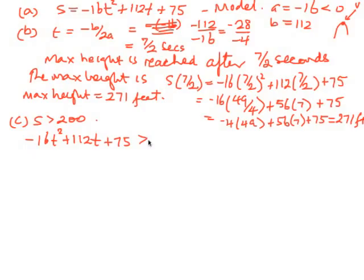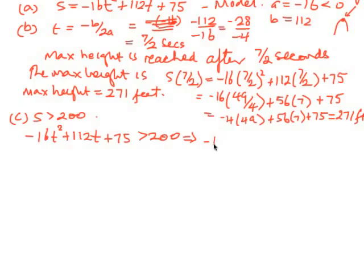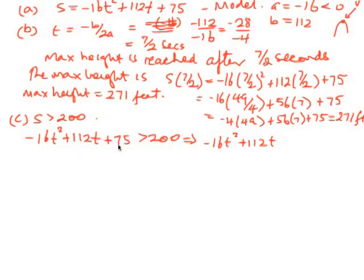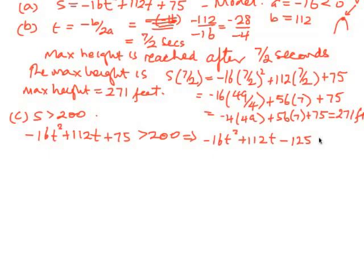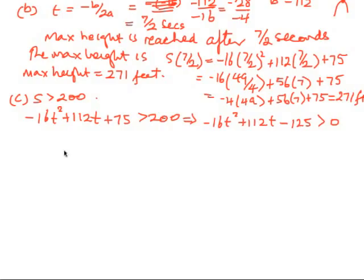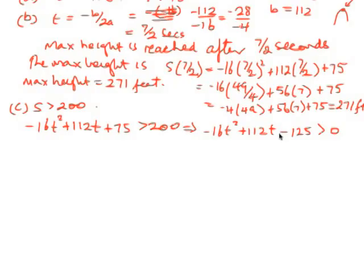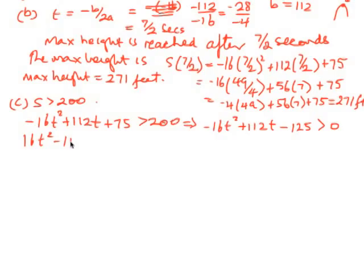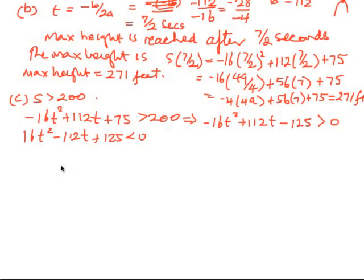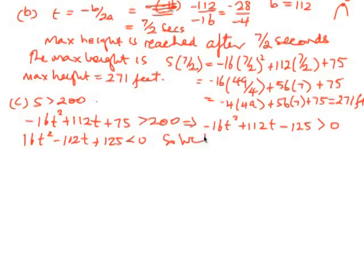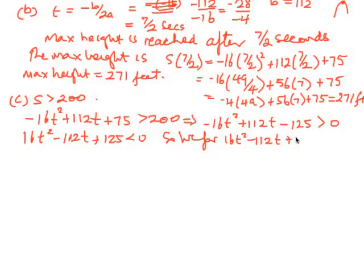Part C: for what interval of time is the height of the ball greater than 200 feet? So we want to look at when s is greater than 200. We're looking for when negative 16t squared plus 112t plus 75 is greater than 200. This is an inequality, implying that negative 16t squared plus 112t, subtracting 200, gives us negative 125, which has got to be greater than 0. We divide through by negative 1, so 16t squared minus 112t plus 125 must be less than 0.